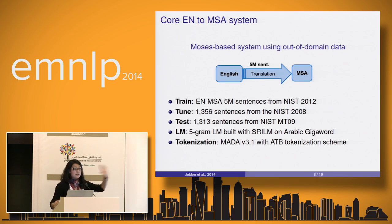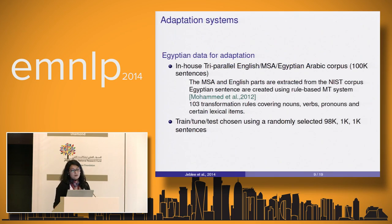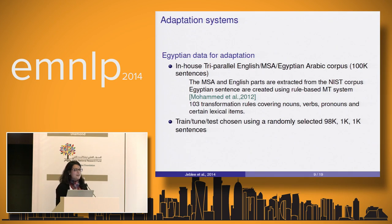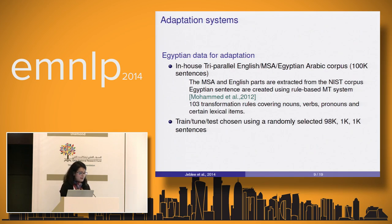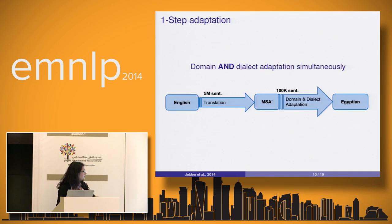This core system translates English into MSA and is used later to translate into Egyptian. For the adaptation systems, we needed in-domain data: a triple English–MSA–Egyptian Arabic corpus. The MSA and English sides are extracted from the NIST corpus, and the Egyptian side was automatically generated using a rule-based system developed by Madhu Mohammed, which uses 103 transformation rules covering nouns, verbs, and certain lexical items. This is our 100K corpus.